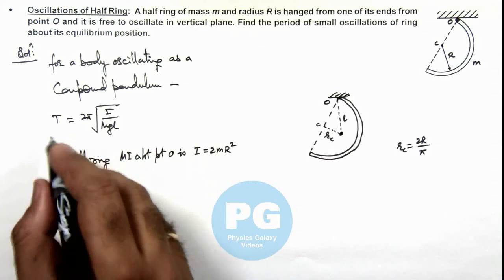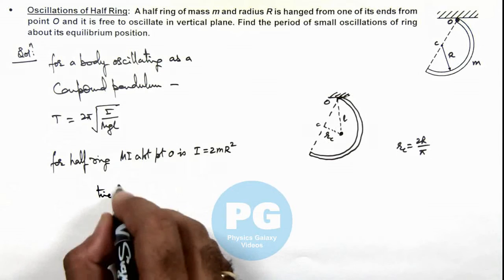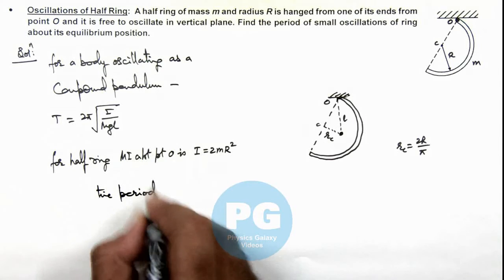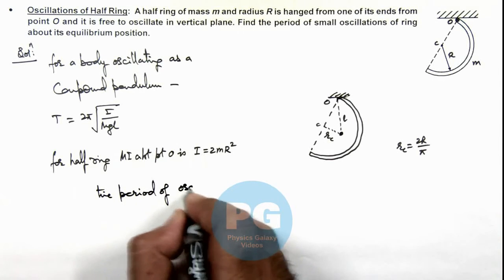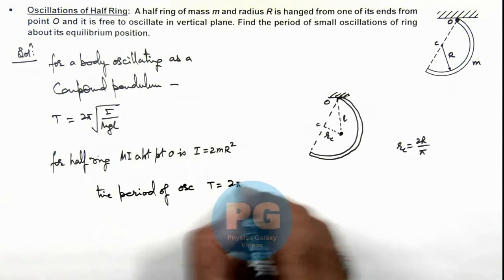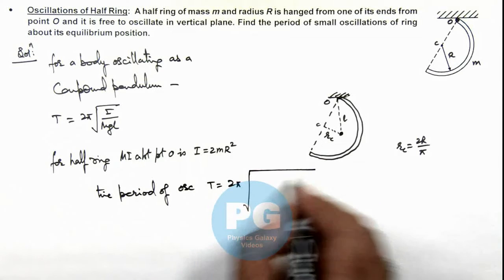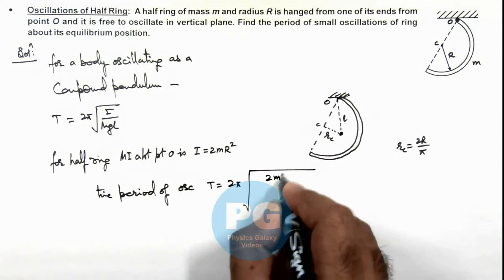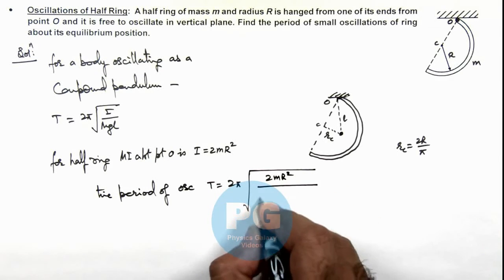So here we can see the time period of oscillation can be given as T = 2π√(2mr²/mg...).